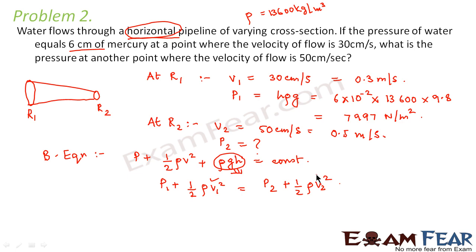So we know the values of V1 and V2. We know the value of rho. We also know the value of P1. So we can calculate the value of P2 from this equation.